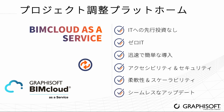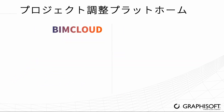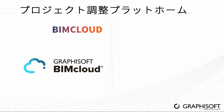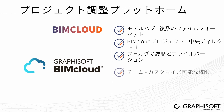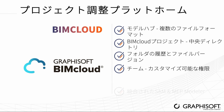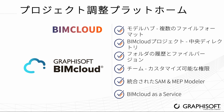Always runs the latest updates with all the new features without maintenance downtime. Successfully manage your projects using BIMcloud as a project coordination platform with the following features: BIMcloud as a model hub hosting multiple file formats, BIMcloud project as a central directory, rollback via folder history and file versions, teams with associated project-specific permission systems, integrated structural analytical model and MEP modeler, BIMcloud as a service, and option to use BIMcloud in the cloud. Visit graphisoft.com to learn more about ARCHICAD or download your trial version today.